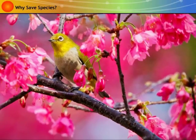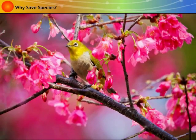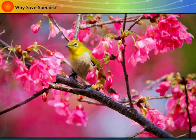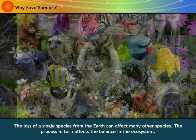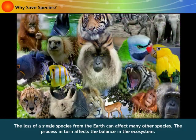Biological diversity is an important aspect of the ecosystem. The loss of a single species from the earth can affect many other species, and this process in turn affects the balance in the ecosystem.